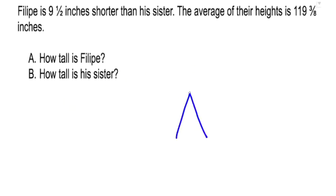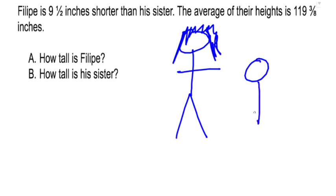So we have sister taller than Philippe by nine and a half inches. Just so you know, Philippe and sister are giants. Now, the average of their heights is 119 and 3 eighths inches.